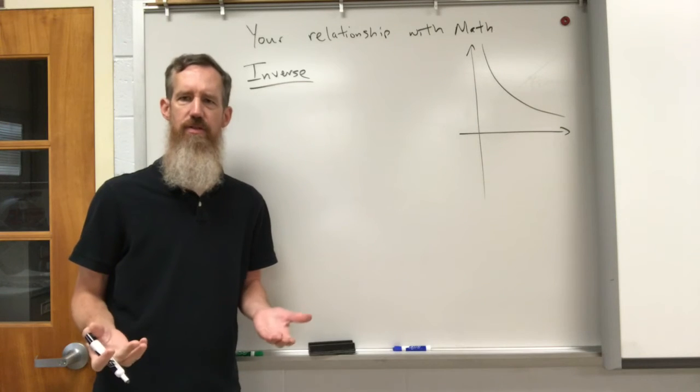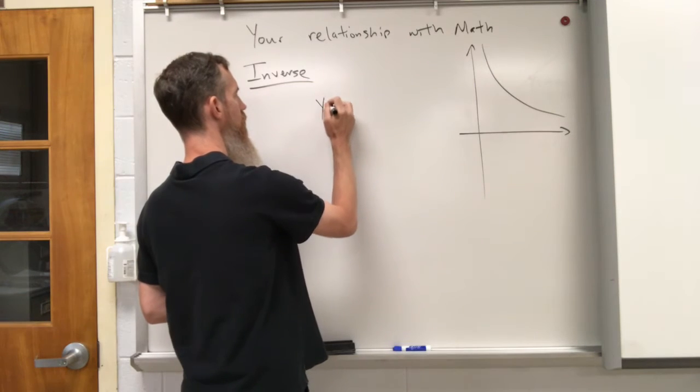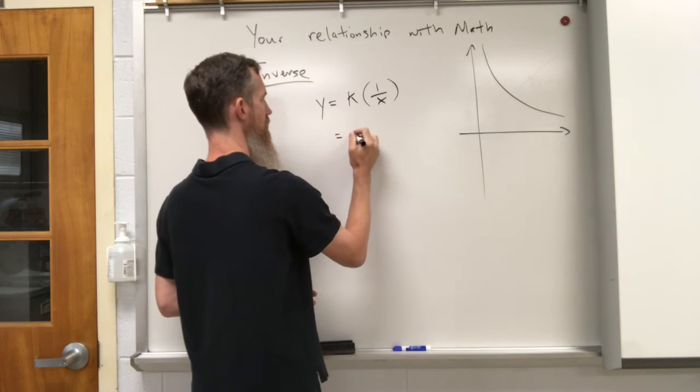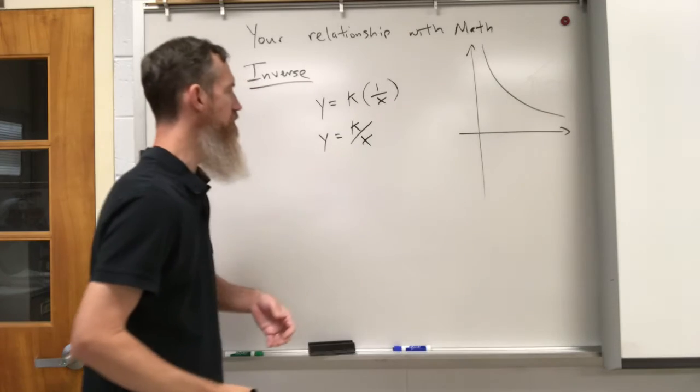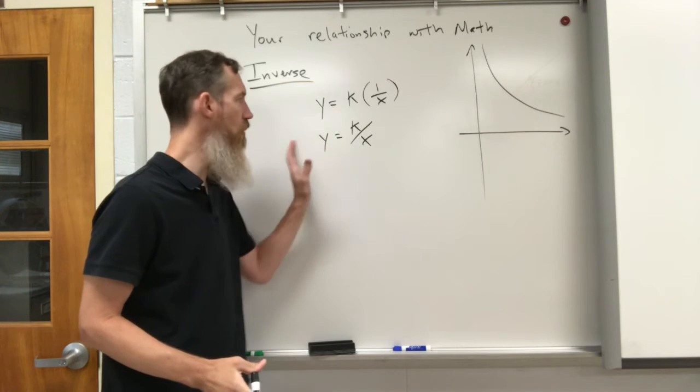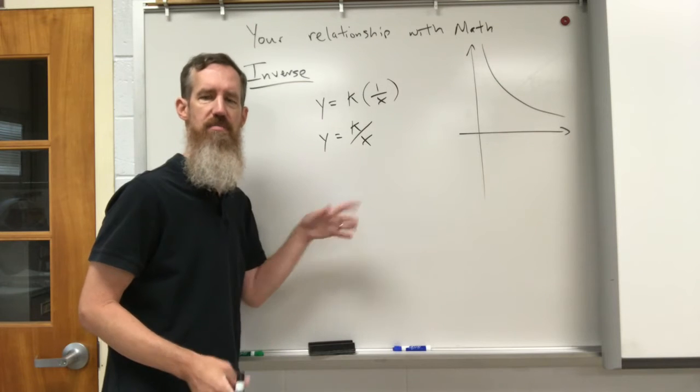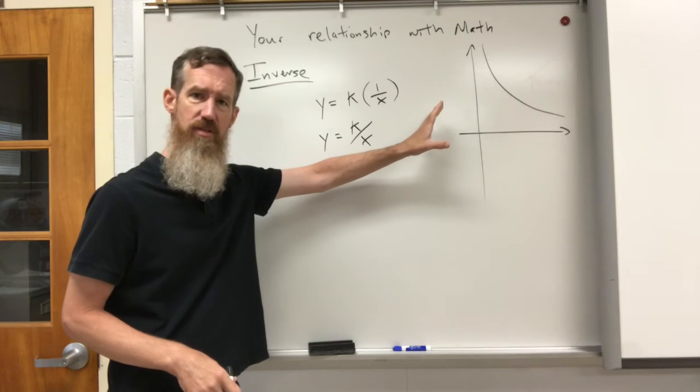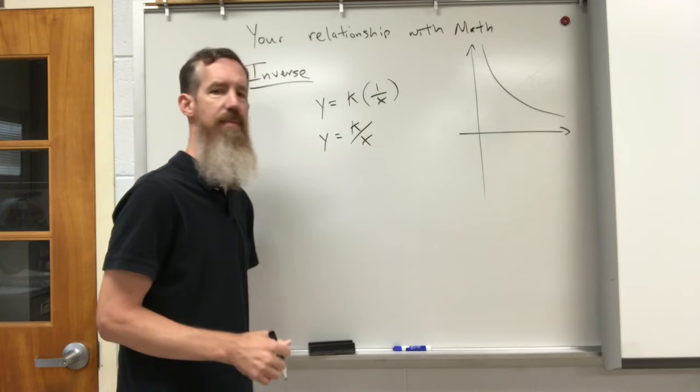Right now we're going to do an inverse relationship. An inverse relationship has the form of y equals k times one over x, which is kind of dumb. We can just say y equals k over x. K is your constant. If y goes up, x has got to go down and vice versa, inverse. And the graph shape typically looks like that. This is an ideal version where we don't have the graph shifting up, down, or side to side.